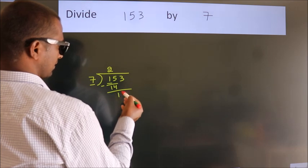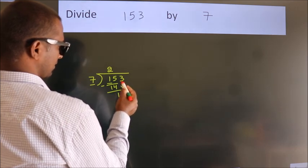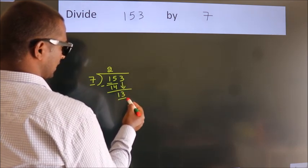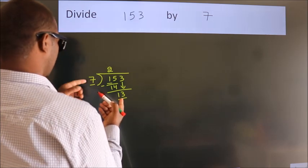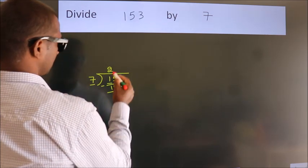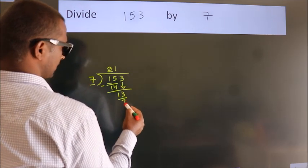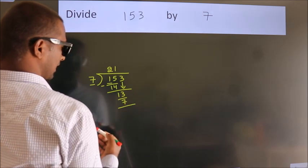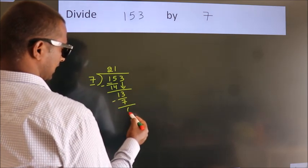After this, bring down the beside number. So 3 down. So 13. A number close to 13 in the 7 table is 7 ones, 7. Now we subtract. We get 6.